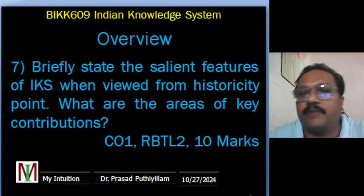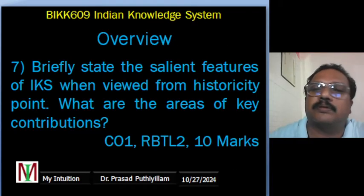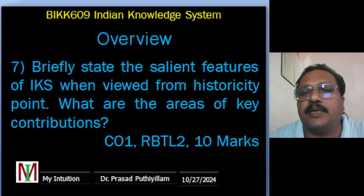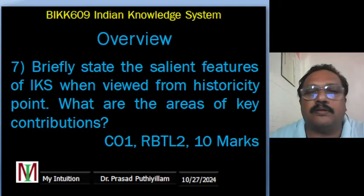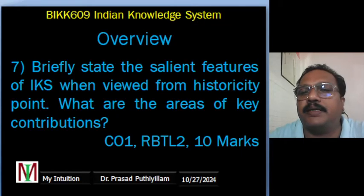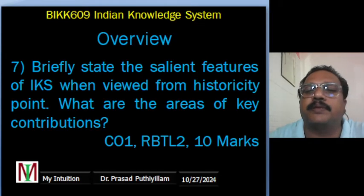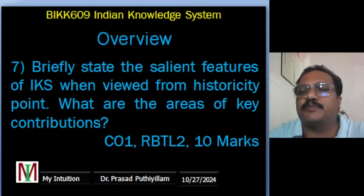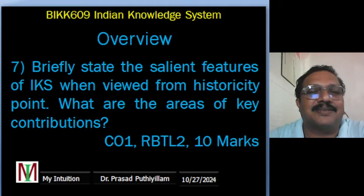Moving to the seventh question of the first unit overview: 'Briefly state the salient features of the Indian Knowledge System when viewed from the historicity point. What are the areas of key contributions?' This is a CO1 level question — I'd say it's a level-2 question worth 10 marks. I've uniformly set it as 10 marks because the textbook covers it in more than one and a half pages.